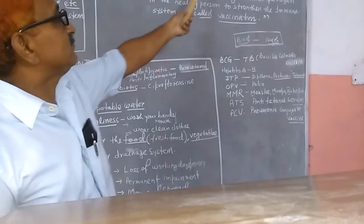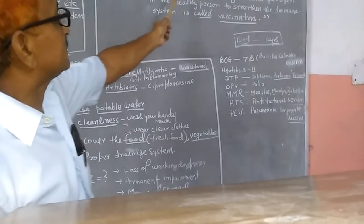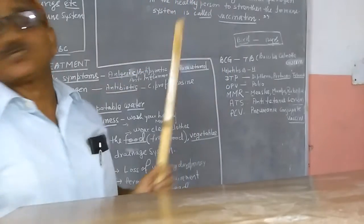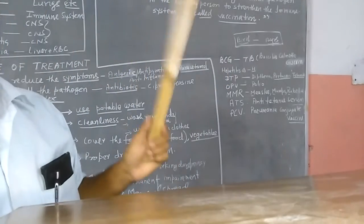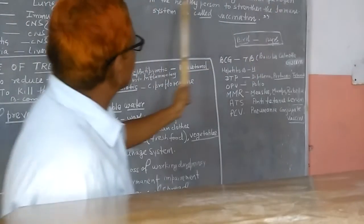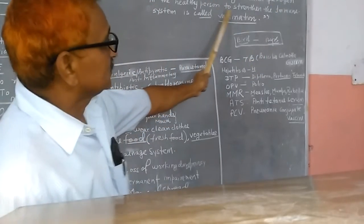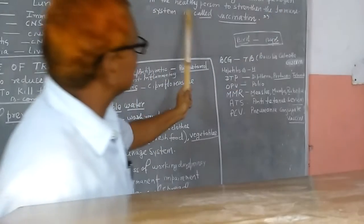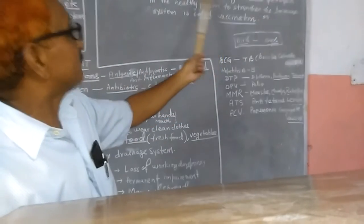Next is immunization. What do you mean by immunization? Immunization is the strengthening of the immune system. We have an immune system that fights against infection. The process of introducing a treated pathogen in a healthy person to strengthen the immune system is called vaccination.